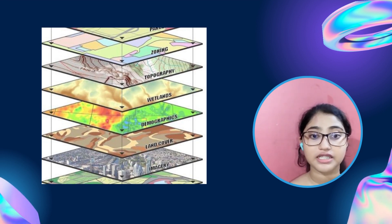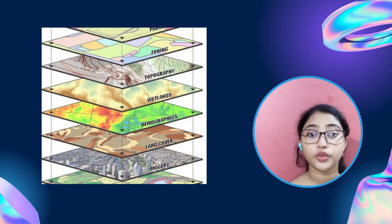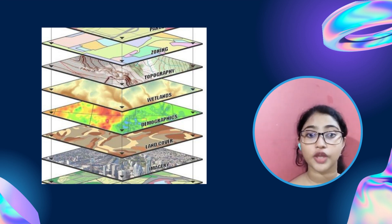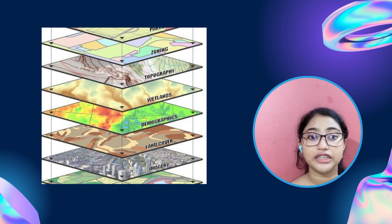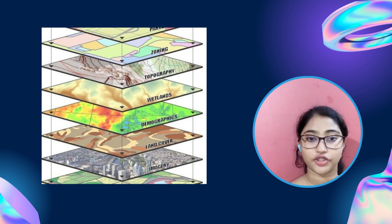For example, streets, buildings, vegetation, etc. This also helps people to more easily understand, analyze and see the relationships and patterns. It also helps people to make better decisions using spatial data, such as finding the optimal route between two cities, weather forecasting, or locating a new store location.